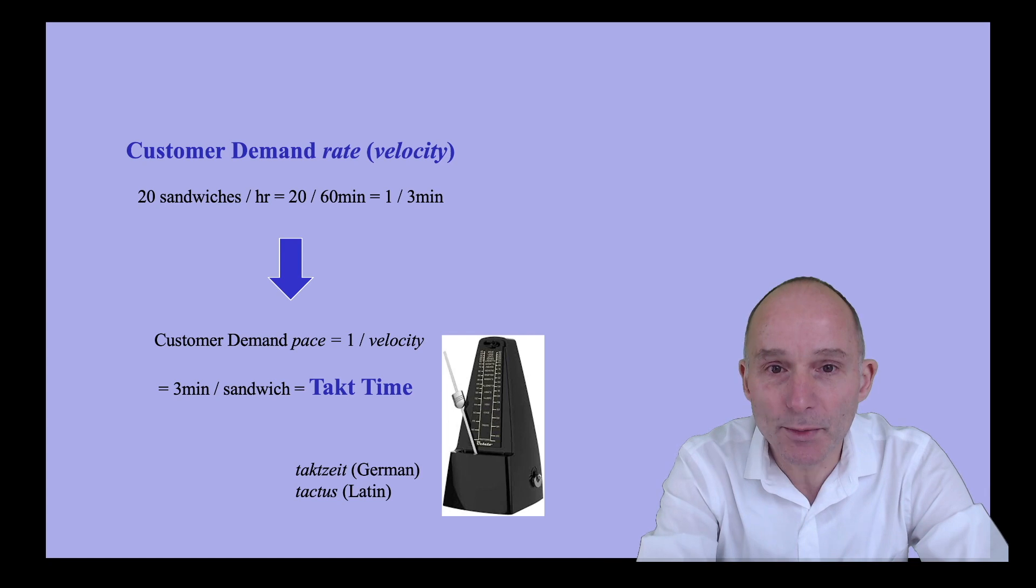Takt time derives from the German word taktzeit, which denotes the time between successive beats, like on a metronome.